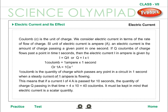One coulomb is the quantity of charge which passes through any point in a circuit in one second when a steady current of one ampere is flowing. For example, if a current I of four amperes is passed for 10 seconds, the quantity of charge Q passing in that time equals 4 × 10 = 40 coulombs. It must be kept in mind that electric current is a scalar quantity.